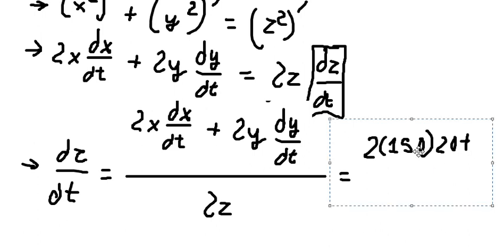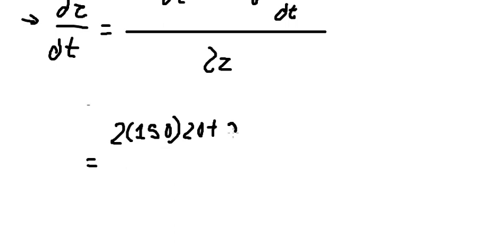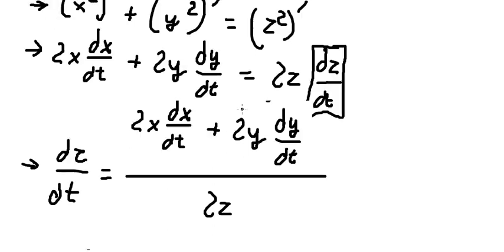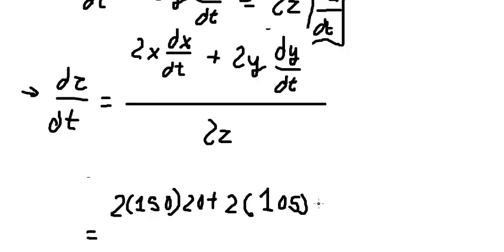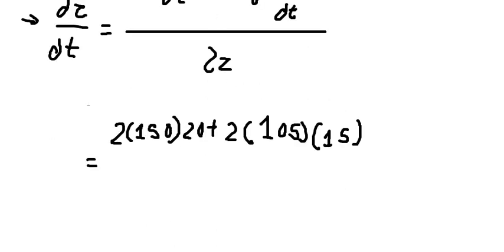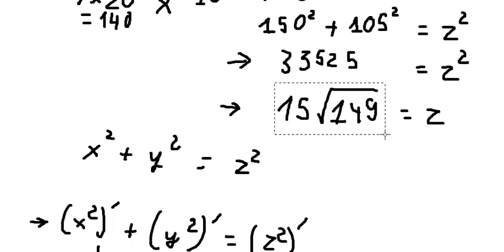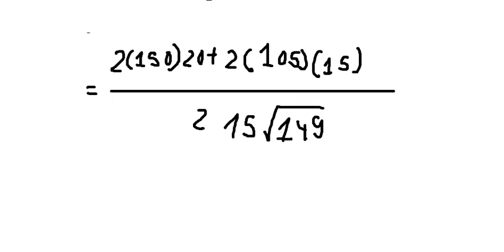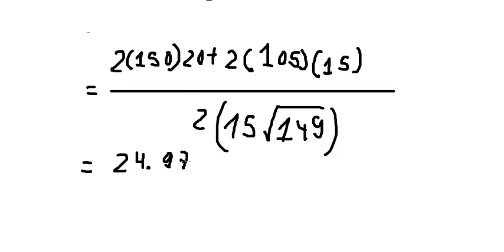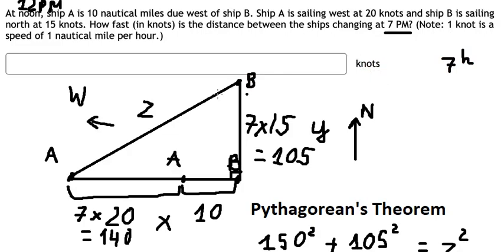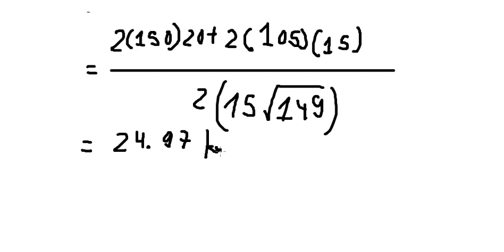For ship B, y is about 105, and dy/dt is about 15. We also substitute z — that is the value we calculated earlier. We calculate this and we have approximately 24.97, and the unit is knots. This is the end — thank you for watching.